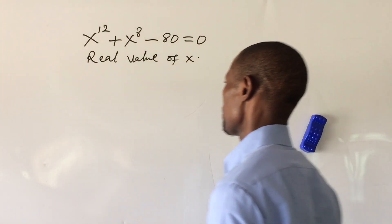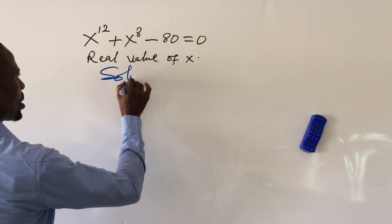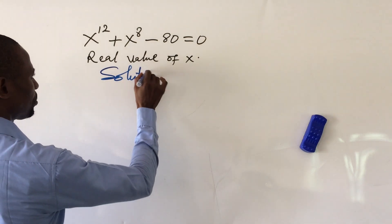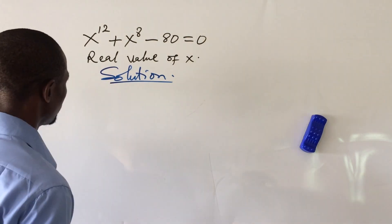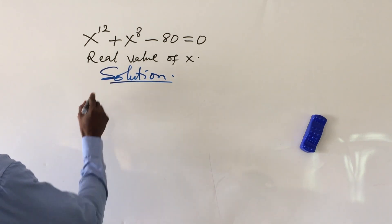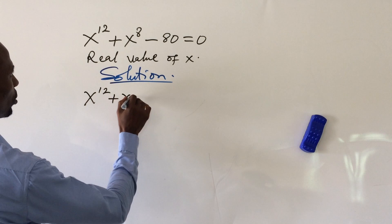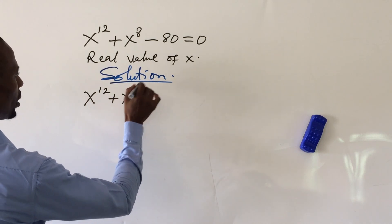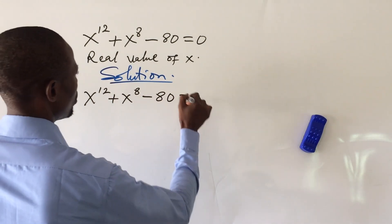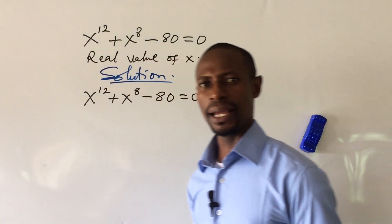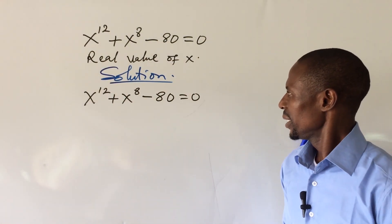Without much waste of time, let's write down our equation. Our equation is: x to the power of 12 plus x to the power of 8 minus 80 equals zero.